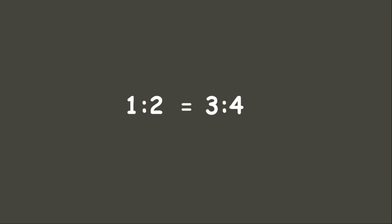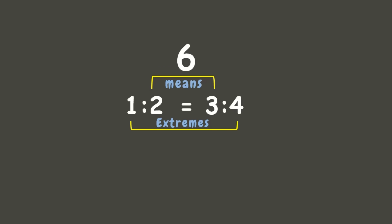Let's have another example: one is to two equals three is to four. Let's see if they are proportional to each other. Multiplying the means: three times two is six. Multiplying the extremes: one times four is four. Six and four are not equal to each other, which means the ratios one is to two and three is to four are not proportional to each other.